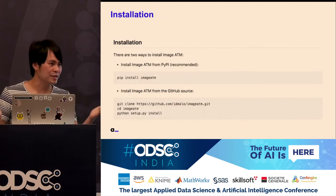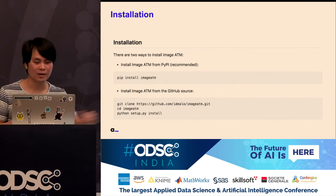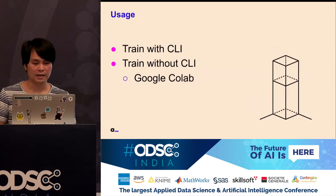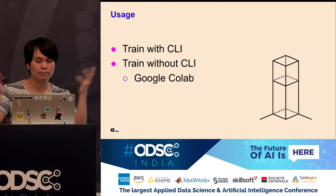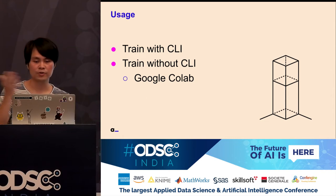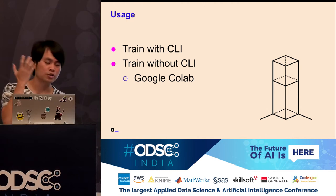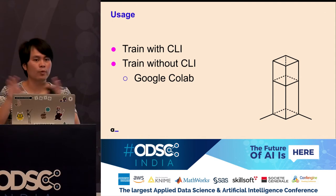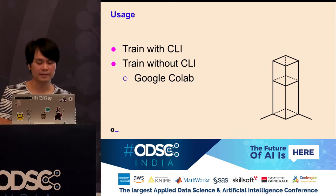How do you install it? Very easy — like most Python users: pip install. We made it as easy as possible, and you can also take the bleeding edge from source code. In terms of usage, we defined two options: either you train using the command line or without it — using a Jupyter notebook or Google Colab. The Jupyter and Colab option was very important because sometimes we have special problems where we still work interactively.